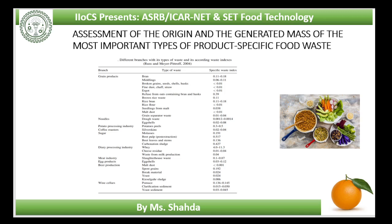Egg products: in egg processing, the originating waste consists almost only of eggshells, regardless of which egg products — including deep frozen, spray dried or chemically preserved eggs, egg yolks, egg-derived lecithin or egg oil — are produced. The high variation in accumulated waste can be attributed to the variation in egg size and shell thickness. The specific waste index of egg shells lies between 0.03 and 0.12, calculated using the mass of egg products obtained from the eggs.